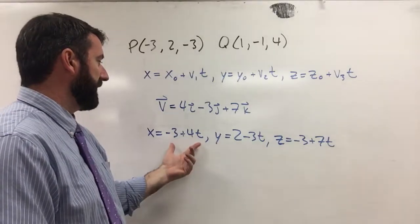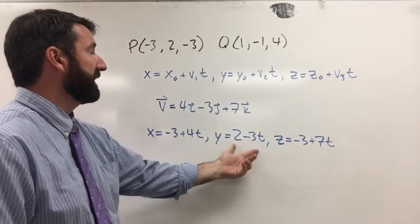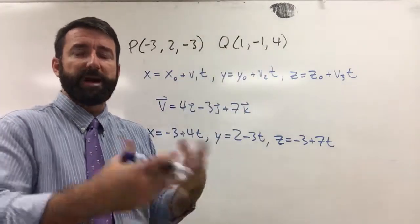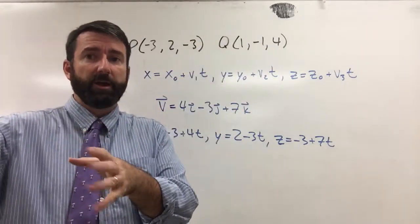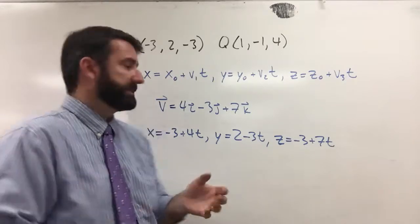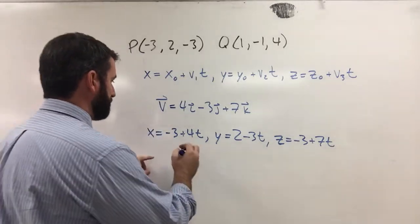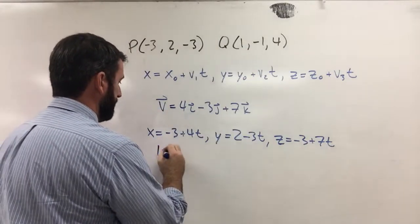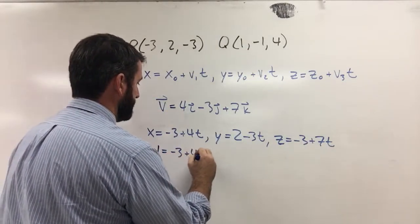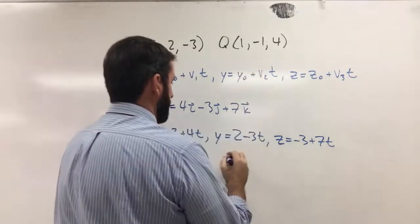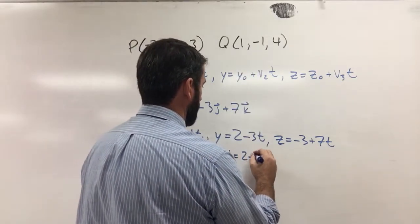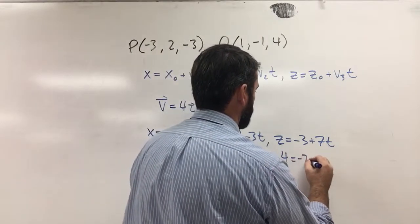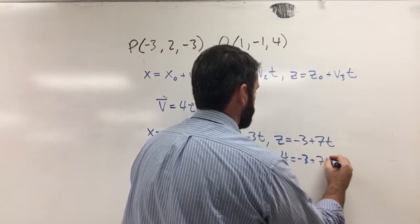But then what are we going to plug in for t to get Q? What's the value for t that's going to give us the other endpoint of our line segment? Well, let's set this equal to the coordinates there. So this is going to be 1 = -3 + 4t, -1 = 2 - 3t, and then 4 = -3 + 7t.